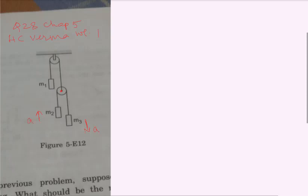But as this pulley is going to come down with acceleration ap, m3 is going to have an acceleration of a plus ap and m2 is going to have an acceleration of a minus ap.